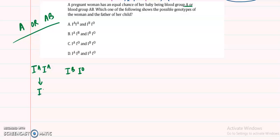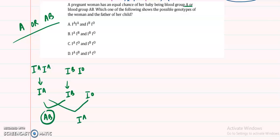For option A: the woman's gametes are IA only, and the father's gametes are IB and IO. Crossing these gives IAIB — which is AB blood group — and IAIO — which is A blood group. So this gives only A and AB, each at 50%. Option A is the correct answer.